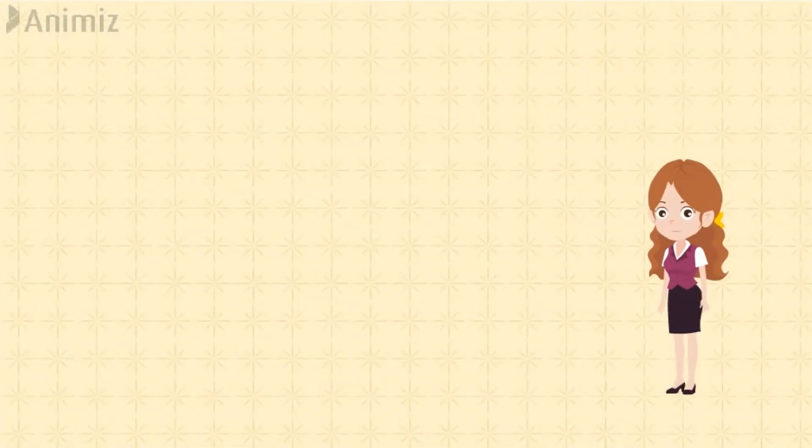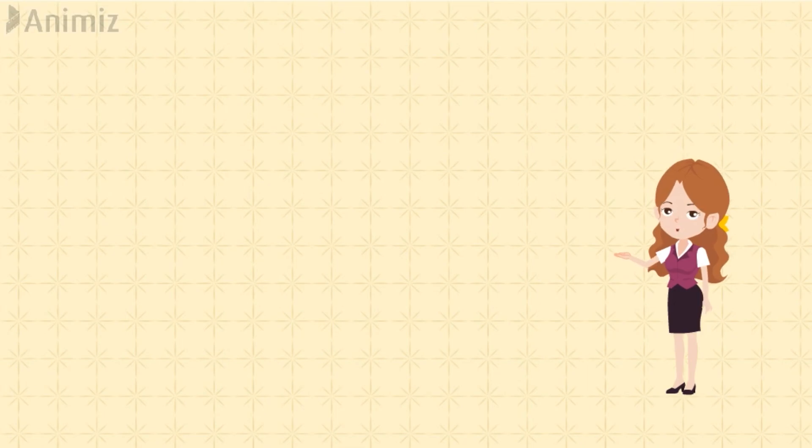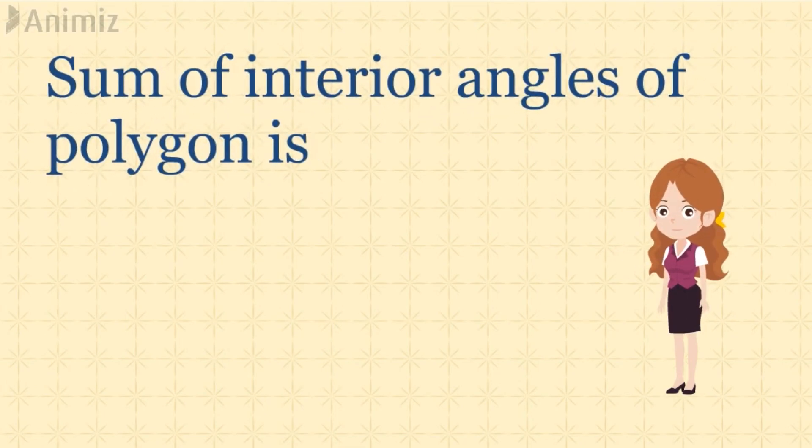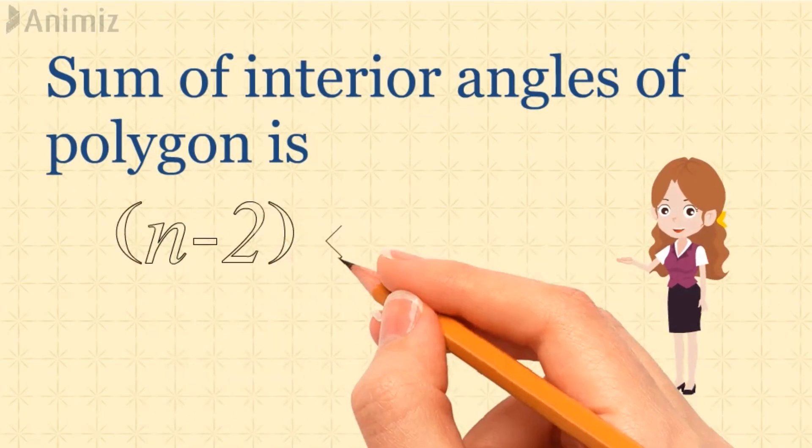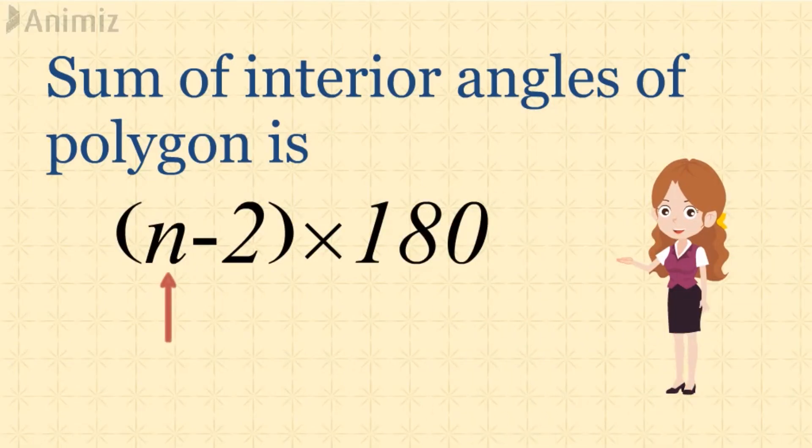So, here's the formula for sum of interior angles of a polygon, which is given by n minus 2 into 180 degree, where n is the number of sides of the polygon. Let's observe an example.